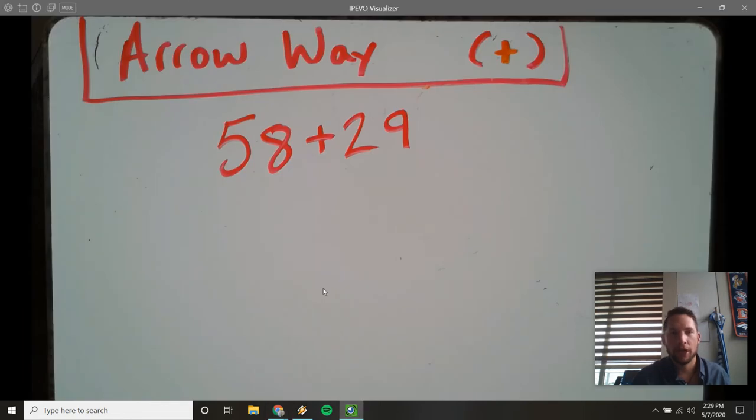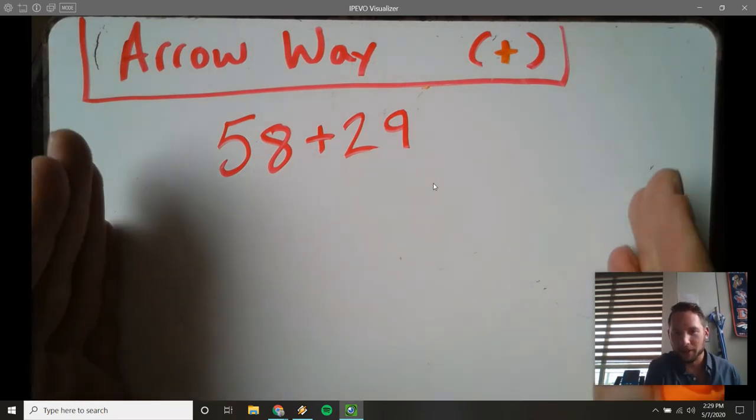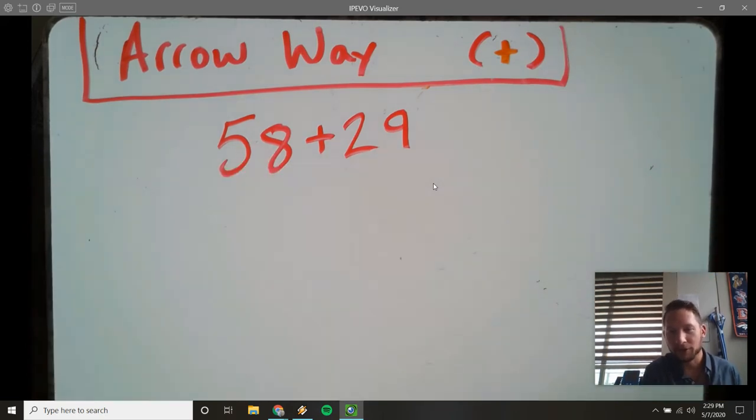Alright, I want to show you the arrow way strategy for addition. This is 58 plus 29. Arrow way is pretty much the number line, same concept, it's just we're using arrows and it can be quicker and easier because you don't have to estimate the length. It just looks a little bit cleaner.